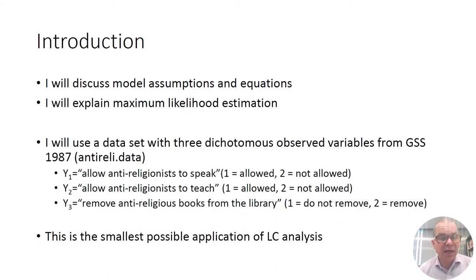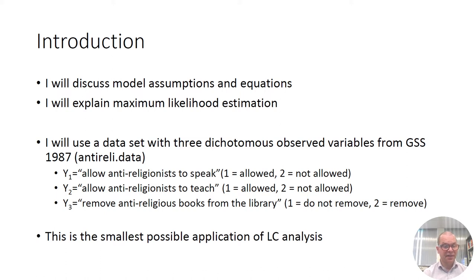To be more concrete, I will discuss more assumptions and equations, and I will explain the principle of maximum likelihood estimation. For this purpose, I will use a very small dataset consisting of three dichotomous indicators. The data is taken from the General Social Survey, 1987. The data file is called anti-reli.dat.